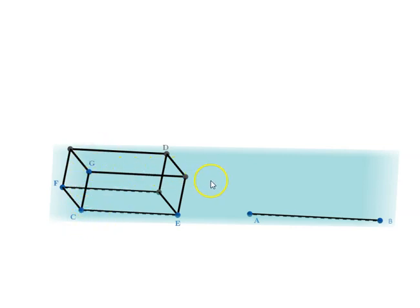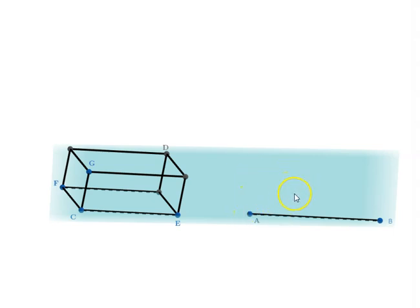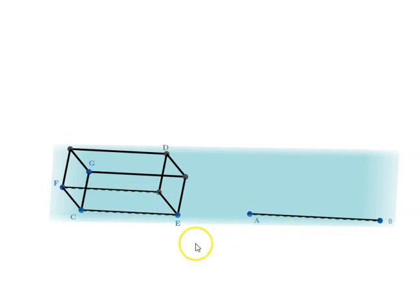We have to construct a similar parallelepipedal on AB. Note that AB is not necessarily equal to CE. When we say similar, all the angles of the new parallelepipedal should be equal to the corresponding angles, and the lengths of the various edges should be in proper proportion. Let us see how we can build such a solid.